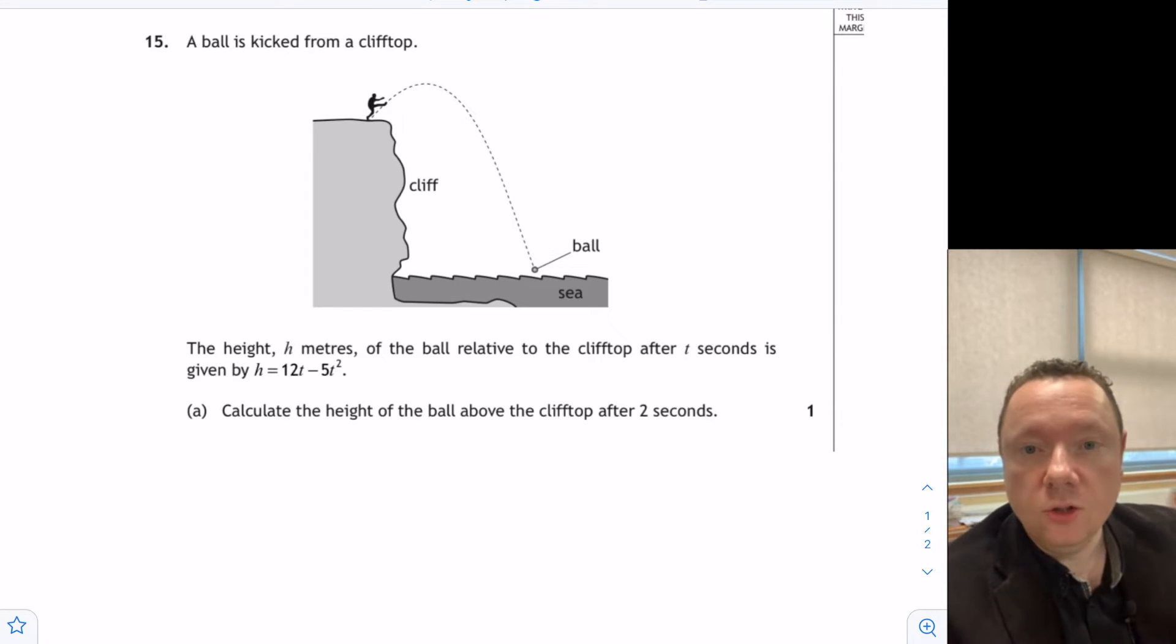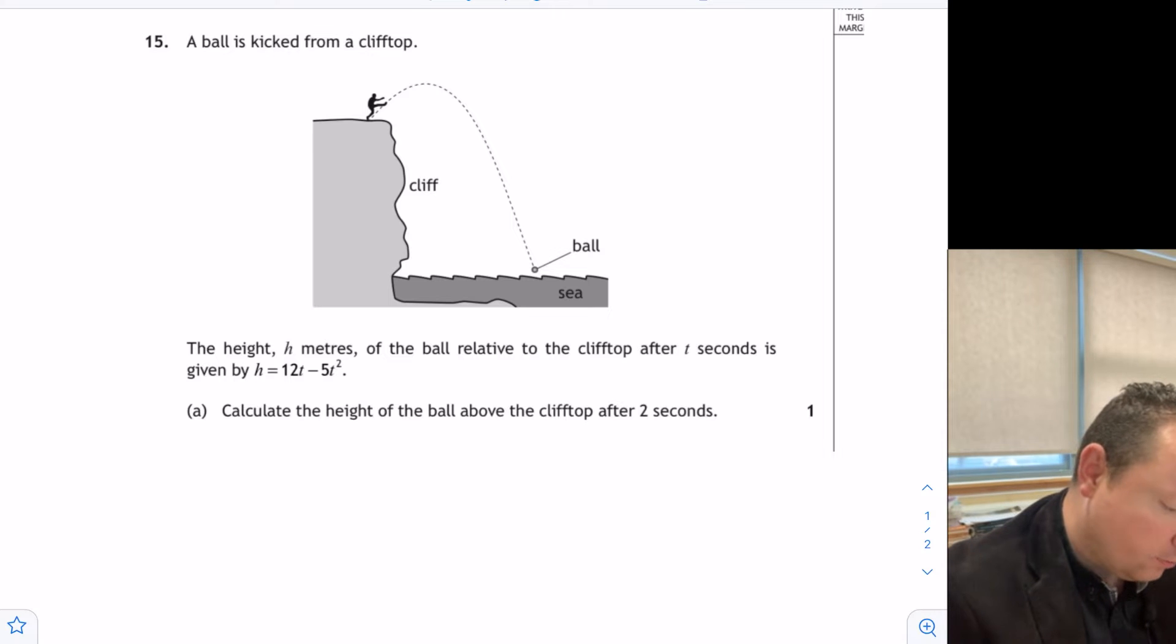Okay, the solution to the first problem: calculate the height of the ball after two seconds. Well, we've got an equation, the height is 12t - 5t², and they want t = 2 because it's two seconds, so it's just a substitution question in an unfamiliar context.